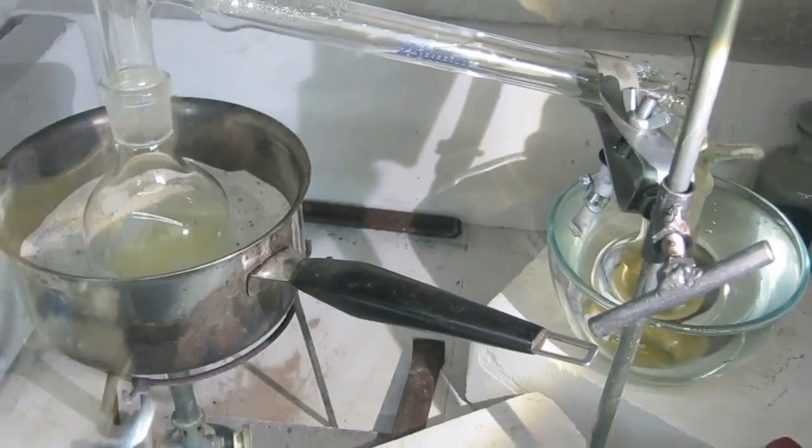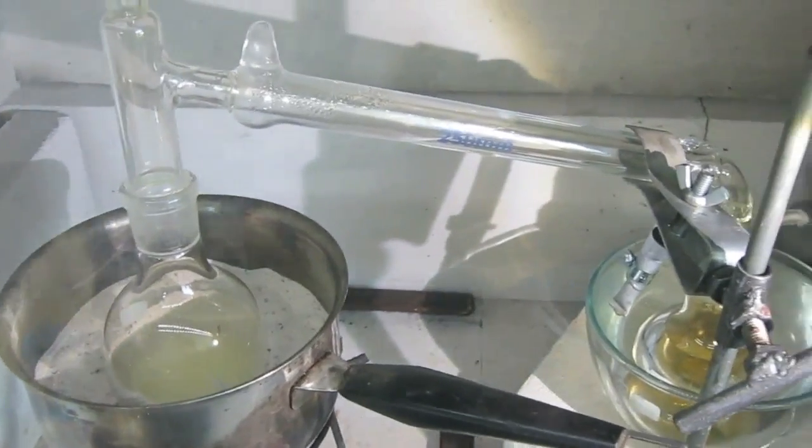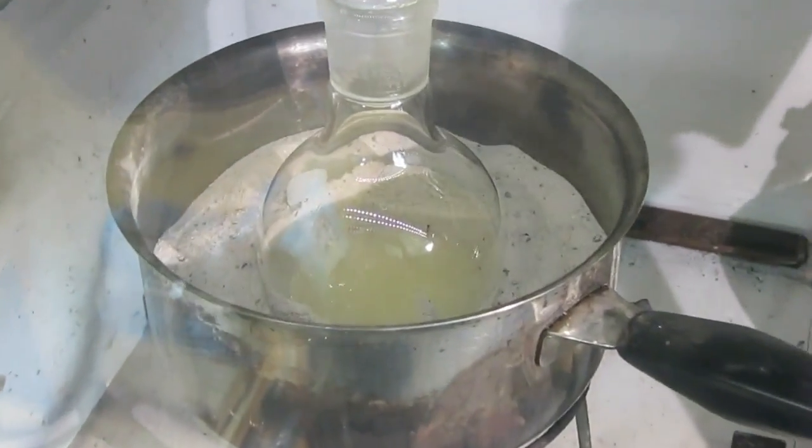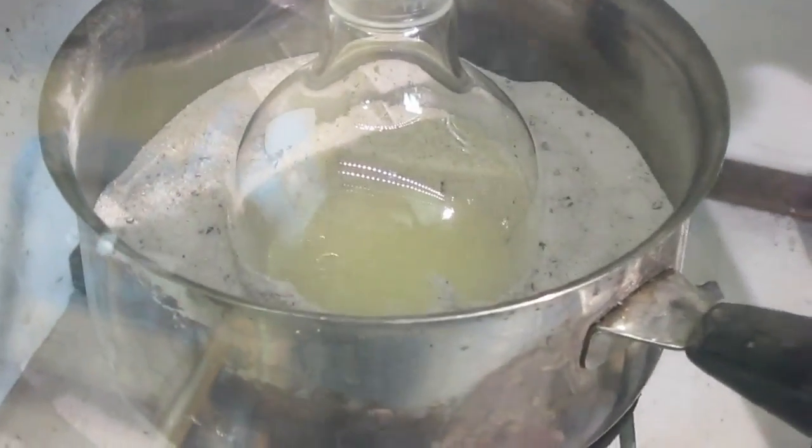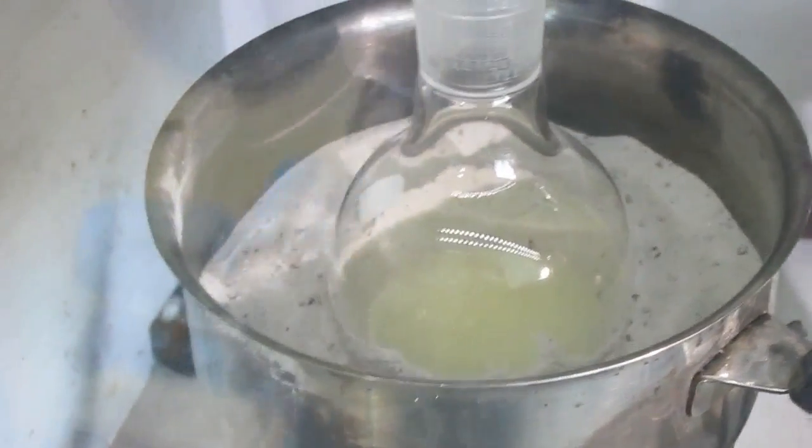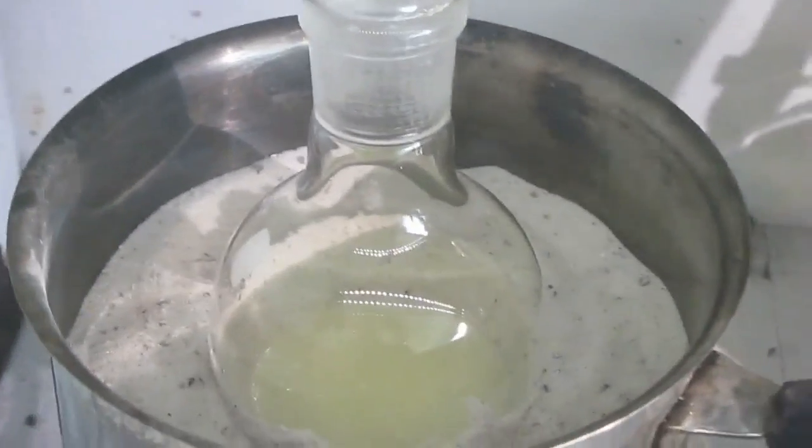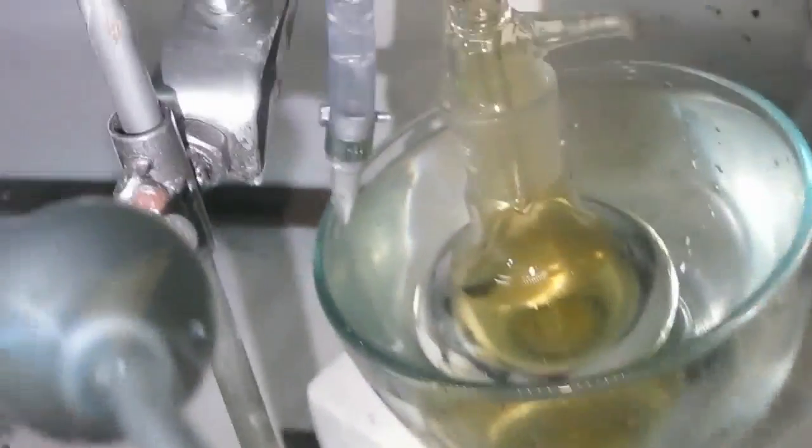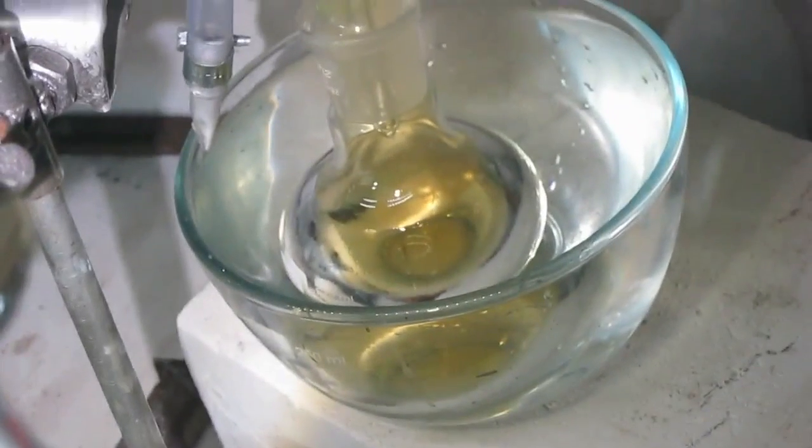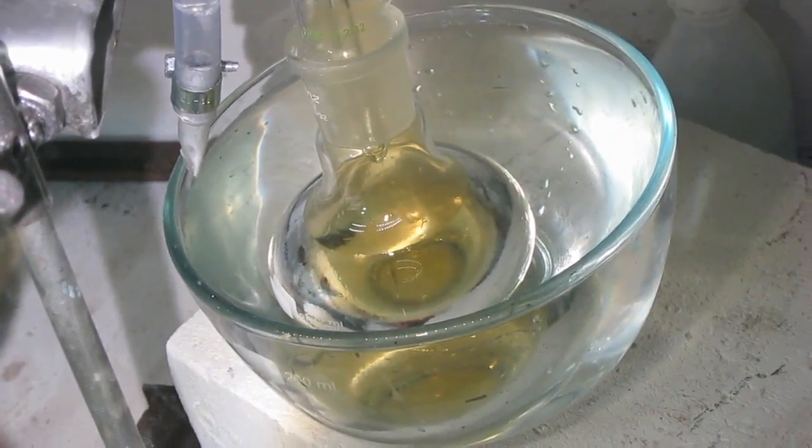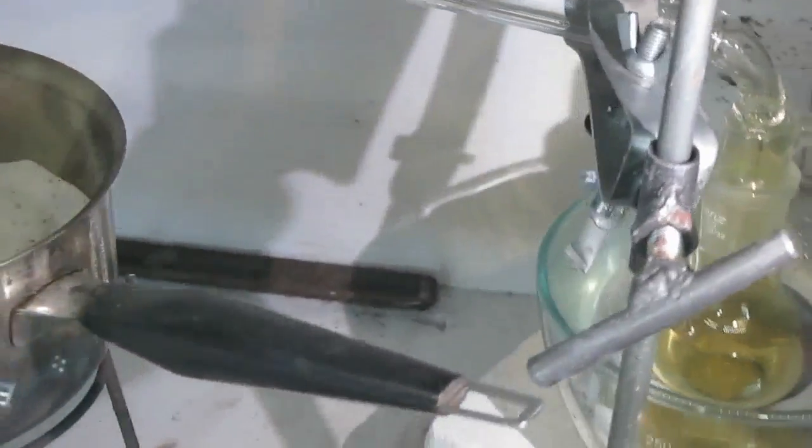Finally, nitric acid distillation works with a sand bath. Herein, you see in the Florence flask that there is some gas escaping from the solution of KNO3 plus H2SO4. And it condenses into the receiving flask. As you see it drips here on the other end. It drips to the other flask. So now it finally works.